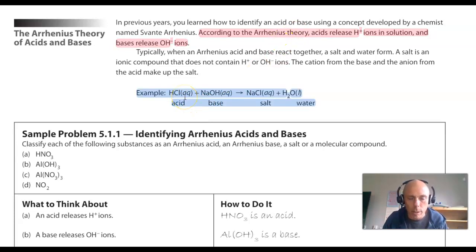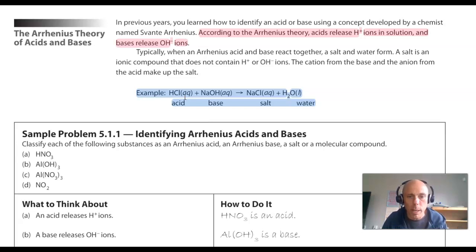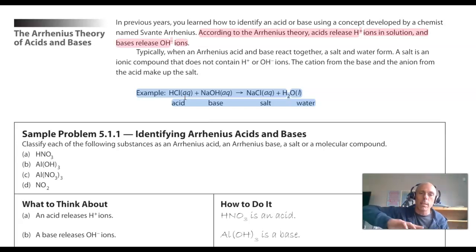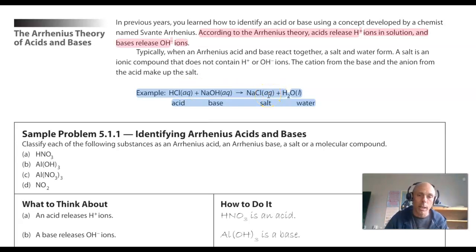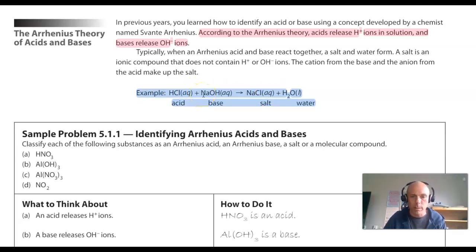Here's an example of an Arrhenius acid, hydrochloric acid, reacting with an Arrhenius base, sodium hydroxide. When an Arrhenius acid and base react, a salt is formed — an ionic compound — and water, because the H+ ion and OH⁻ ion combine to form molecular water.